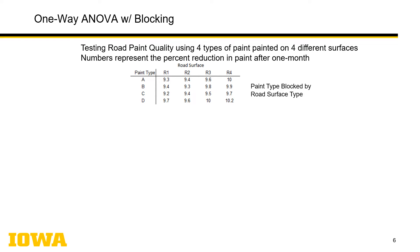Let's do an example using some numbers. We're testing road paint quality using four different types of paint, painted on four different road surfaces. The outcome measurement is the percent reduction in paint after one month — for example, 9.3 means a 9.3% reduction. Paint type, the factor we're concerned about with four levels (A, B, C, D), is in the rows, and road surface 1, 2, 3, and 4 is in the columns.